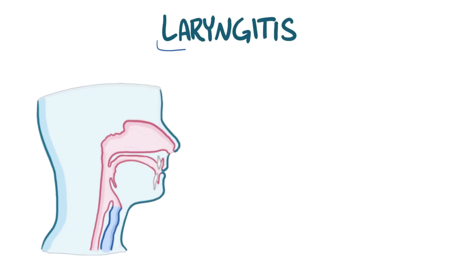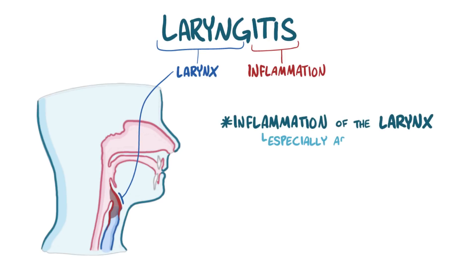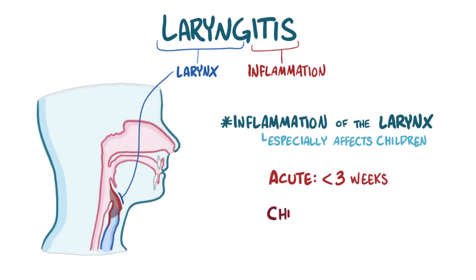With laryngitis, 'larynx' refers to the larynx, and 'itis' refers to inflammation. So laryngitis is inflammation of the larynx, something that especially affects children. It's further classified into acute if it lasts less than three weeks, and chronic if it lasts more than three weeks.